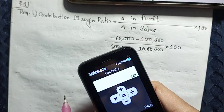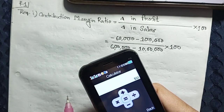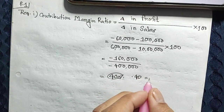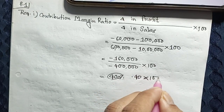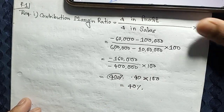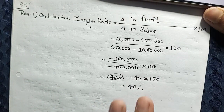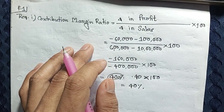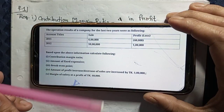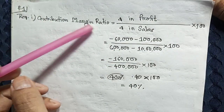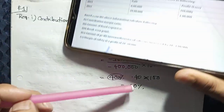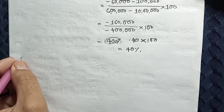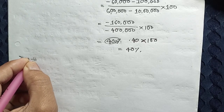For example, it comes to 0.40, or 40 percent. Now regarding the Contribution Margin Ratio formula — if you know the sales and the profit, you can use this formula. When sales change, you can find the profit change using the contribution margin ratio. This is the sutra (formula) to use whenever you need to find profit from sales or vice versa.